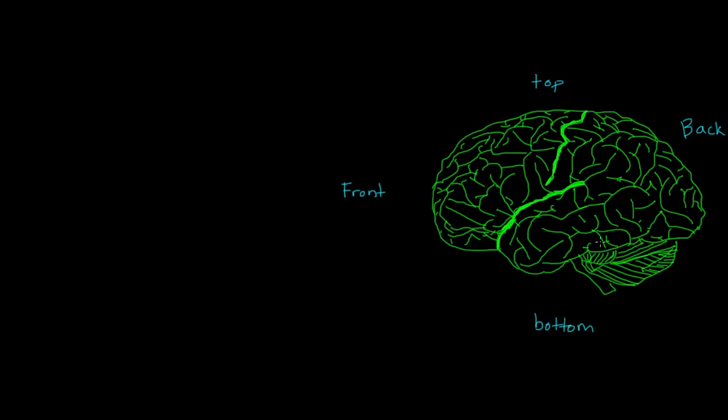We refer to this area, this big one right here, which is the first thing you would see if you were looking at the outer portion of the brain. We call this the cerebral cortex.